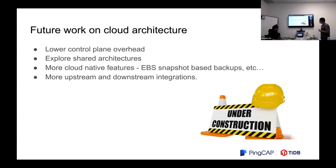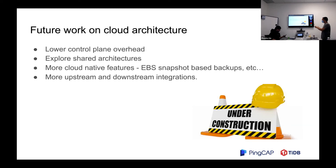For the future, we definitely need to lower the control plane overhead — the per-cluster overhead is still not ideal. We also need to explore shared architectures like serverless, which are very hot right now. We are already on the cloud, and we really want to leverage it more — like using EBS snapshots to do backups efficiently rather than dumping files. We will have more upstream and downstream integrations with AWS and GCP.